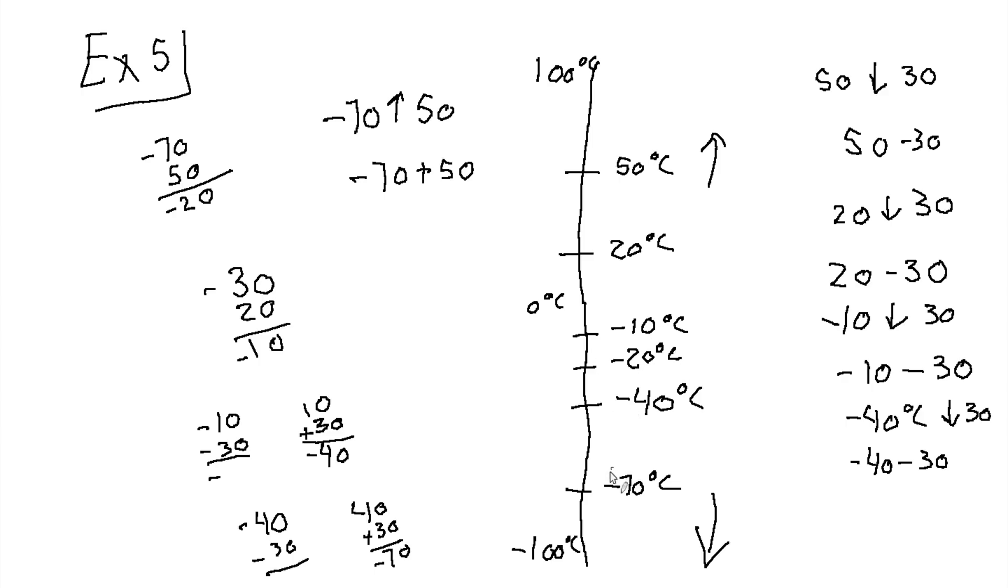Say we want to go up again from negative 20 to another 50 degrees. So, we have negative 20 plus 50. Since 50 is the greater value, and it is positive, your answer will be positive. So, just do the regular subtraction as normal. 50 minus 20 is 30. So, we're at 30 degrees now.